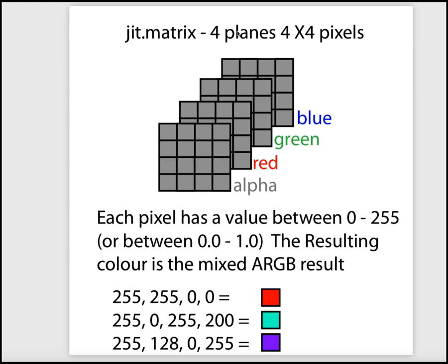In this example, I have a Jitter matrix that is four planes, each of which is four by four. This allows us to represent four pixels of alpha, red, green, and blue. We need all of those in order to render or represent a four-by-four, a tiny window of video. Think of the four-by-four grid as representing a very tiny corner of a video, and then we have four planes to store color information for each of the pixels.